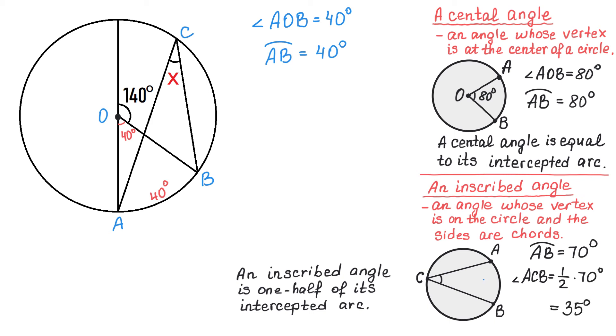So again, in this image the arc is 70 degrees and this angle is 35 degrees, which is half of 70. Now if we go back to the problem we have to solve, then this angle X is an inscribed angle because the vertex is on the circle.